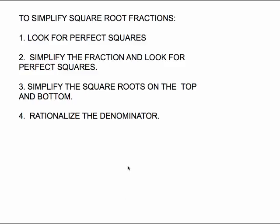Here are your steps to simplify square root fractions. Number one: look for perfect squares. Number two: simplify the fraction and look for perfect squares again. Number three: simplify the square roots on the top and/or the bottom. And the last thing you should do is rationalize your denominator. You can do this in a different order, but sticking with this order is safer — because if you rationalize the denominator too soon, you'll have huge numbers that you have to factor tree out.